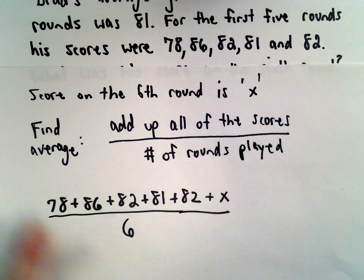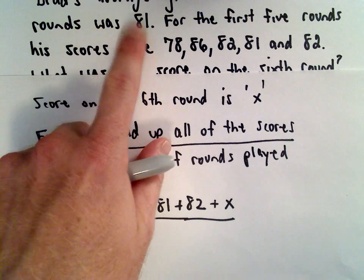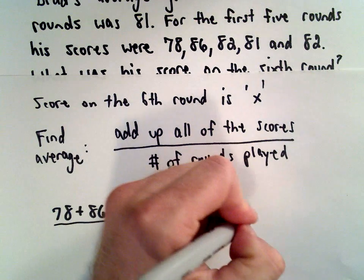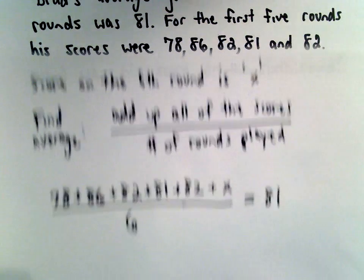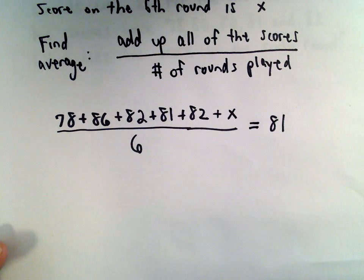This formula would compute the average, but we're told that the average is 81. That was given to us, so we can set all of this equal to 81. Now we have our algebra equation to solve.